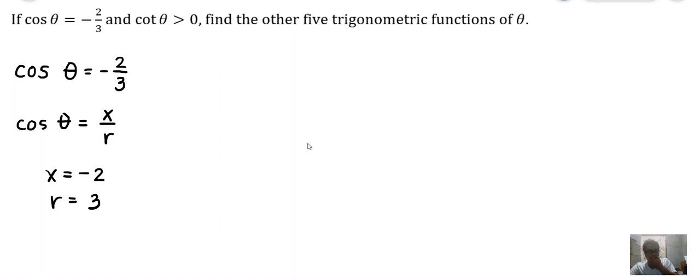Now we solve for y. The sign of y depends on which quadrant the terminal side of the angle lies. Where does our angle lie? Cosine θ is negative, so it should lie either in quadrant 2 or quadrant 3.